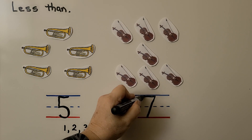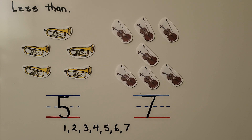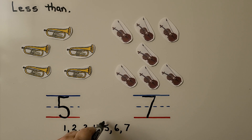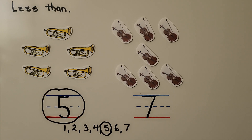We need to circle the number that is less. We can see the numbers in counting order. The number that is less comes first in counting order and has the set with fewer objects. Here's five and here's seven, and five comes first. So it's the lesser number. We can circle the five — it's less than seven.